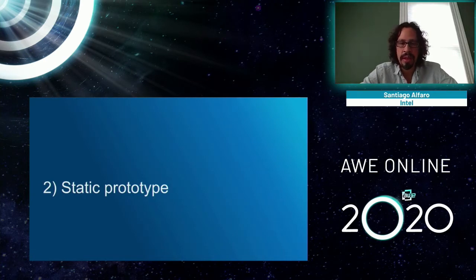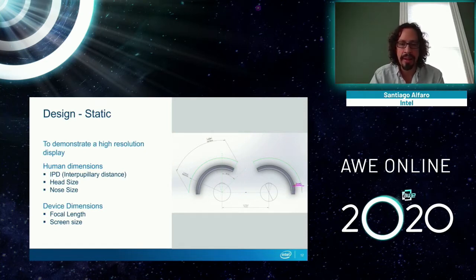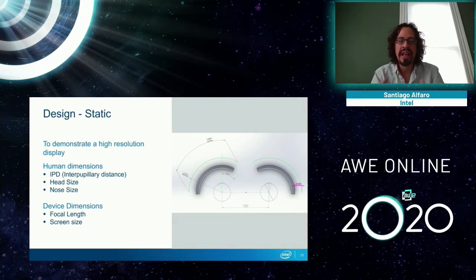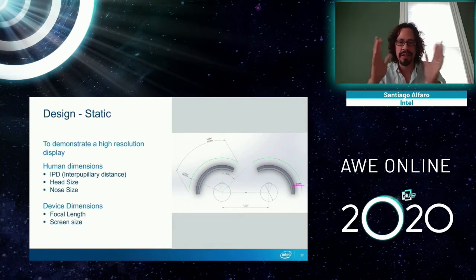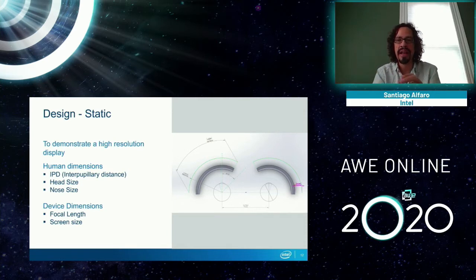Starting with the static prototype, the first thing we needed to figure out was the minimum things we cannot change. We can't change the human factors, so we had to understand inter-pupillary distances, head sizes, nose sizes, and everything in between. I had to build something that would adapt to a 50mm distance between the eyes all the way to a 70mm distance. And not only that — even if somebody has a small IPD, that doesn't mean the head is also smaller. On the other side, we have mechanical constraints: once the lens array is made, I can't change its size or the size of the screen we were going to use. Everything had to work coherently with each other.